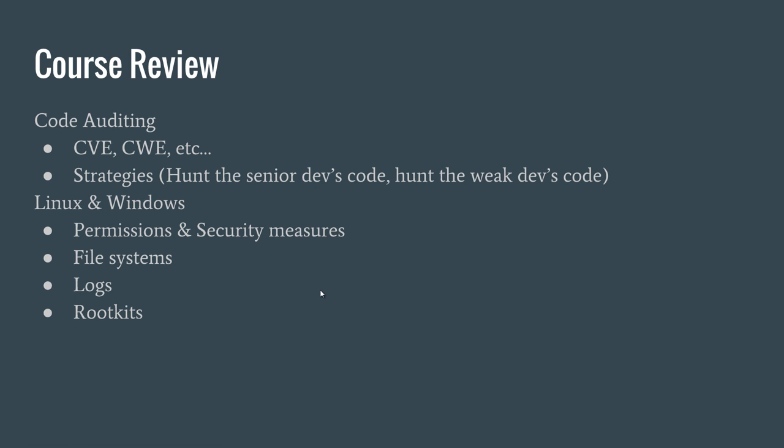Then we covered some code auditing topics with a lot of exercises. We discussed the CVE and CWE terms and some strategies for effectively hunting for bugs in source code. Mainly they boil down to hunting code written by senior developers, because they deal with the most complex problems and there's a greater natural occurrence of vulnerabilities in their edits. Also hunt down any code written by a developer who has a history of creating vulnerable code.